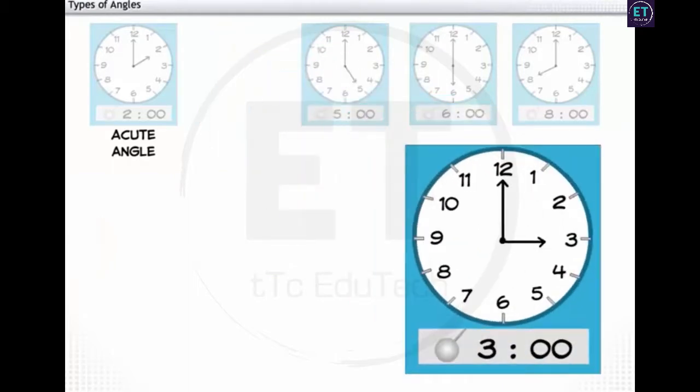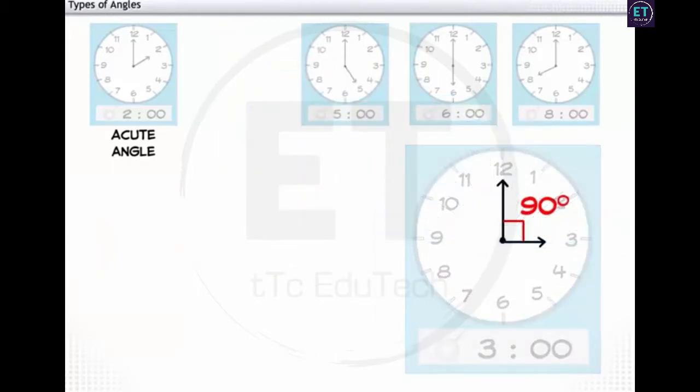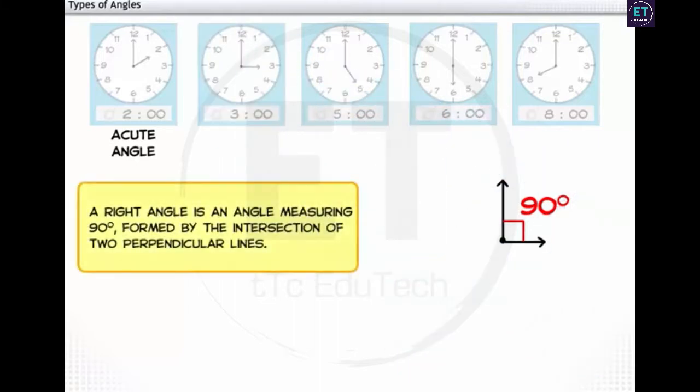When it is 3 o'clock, the rays form a 90 degree angle. The right angle is an angle measuring 90 degrees. It is formed by the intersection of two perpendicular lines.